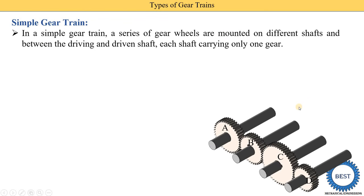In this diagram, we see that there are four gears, so it is called a series of gears. These gears are mounted on different shafts. For gear A, shaft A is used. For gear B, shaft B is used. For gear C, shaft C is used. For gear D, shaft D is used. Means for every gear, a different shaft is used between the driving and driven shaft.